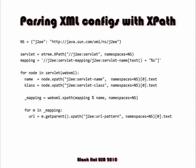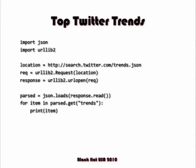JSON maps almost directly to Python types — a JSON object is basically a Python dictionary and a JSON array is basically a Python list. In a couple lines of code you can rip things out of JSON. Here's example code that hits the Twitter API and pulls all current trends. I guarantee if you run that code right now, this talk is probably not one of the top trends — it's probably Britney Spears again for some reason.